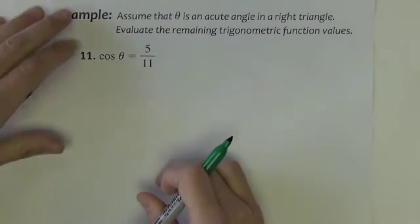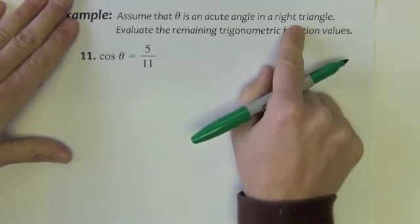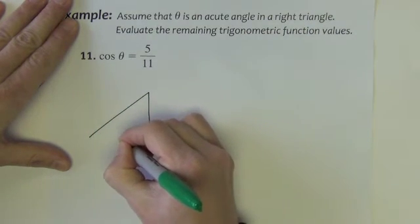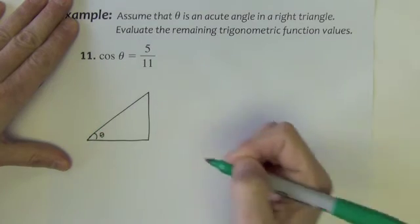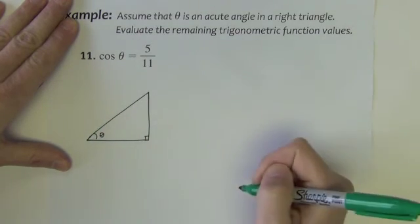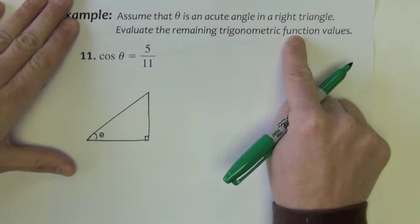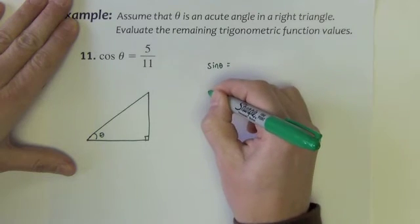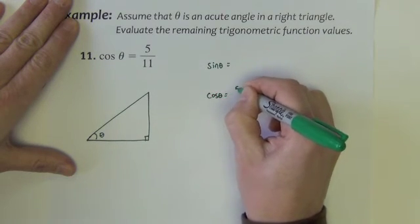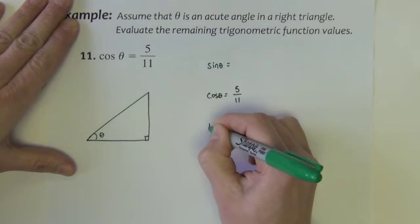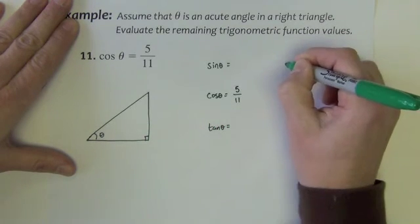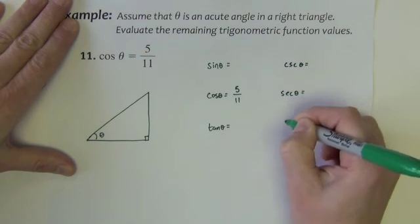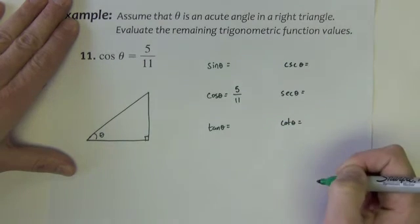Okay, next example. Assume that theta is an acute angle in a right triangle. Okay, let's draw that. There we go. Theta is an acute angle in a right triangle. Evaluate the remaining trig function values. So I'm after sine. Cosine I already have. I need tangent. I need the reciprocals. Cosecant, secant, and cotangent.